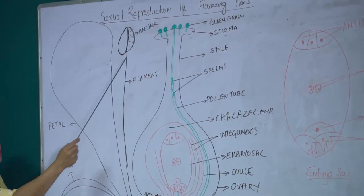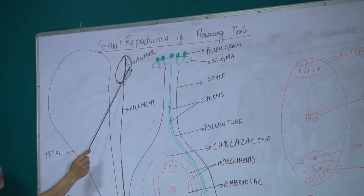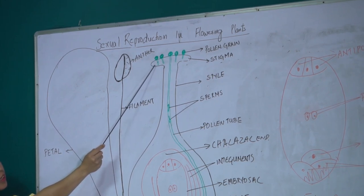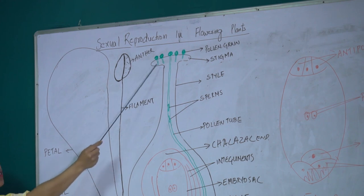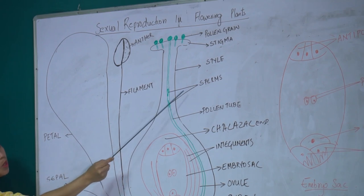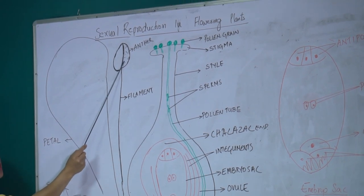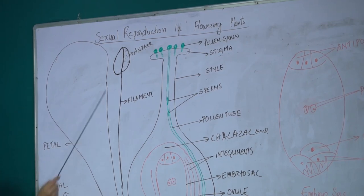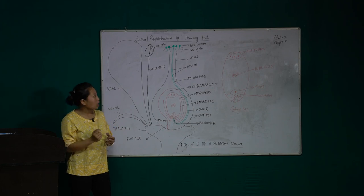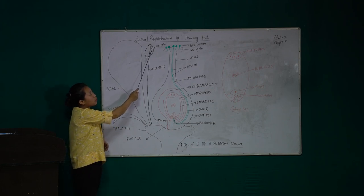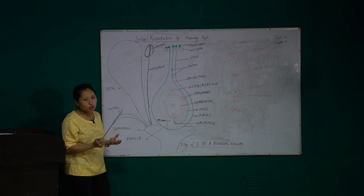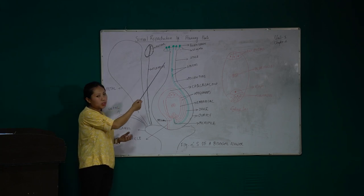Once the pollen grains are formed in the anther, they are microscopic and spherical. They are the carriers of the male gametes or the sperms. Once formed in the anther, the next step is the transfer of these pollen grains. In order for fertilization to take place, these pollen grains have to be carried from the anther to the stigma.